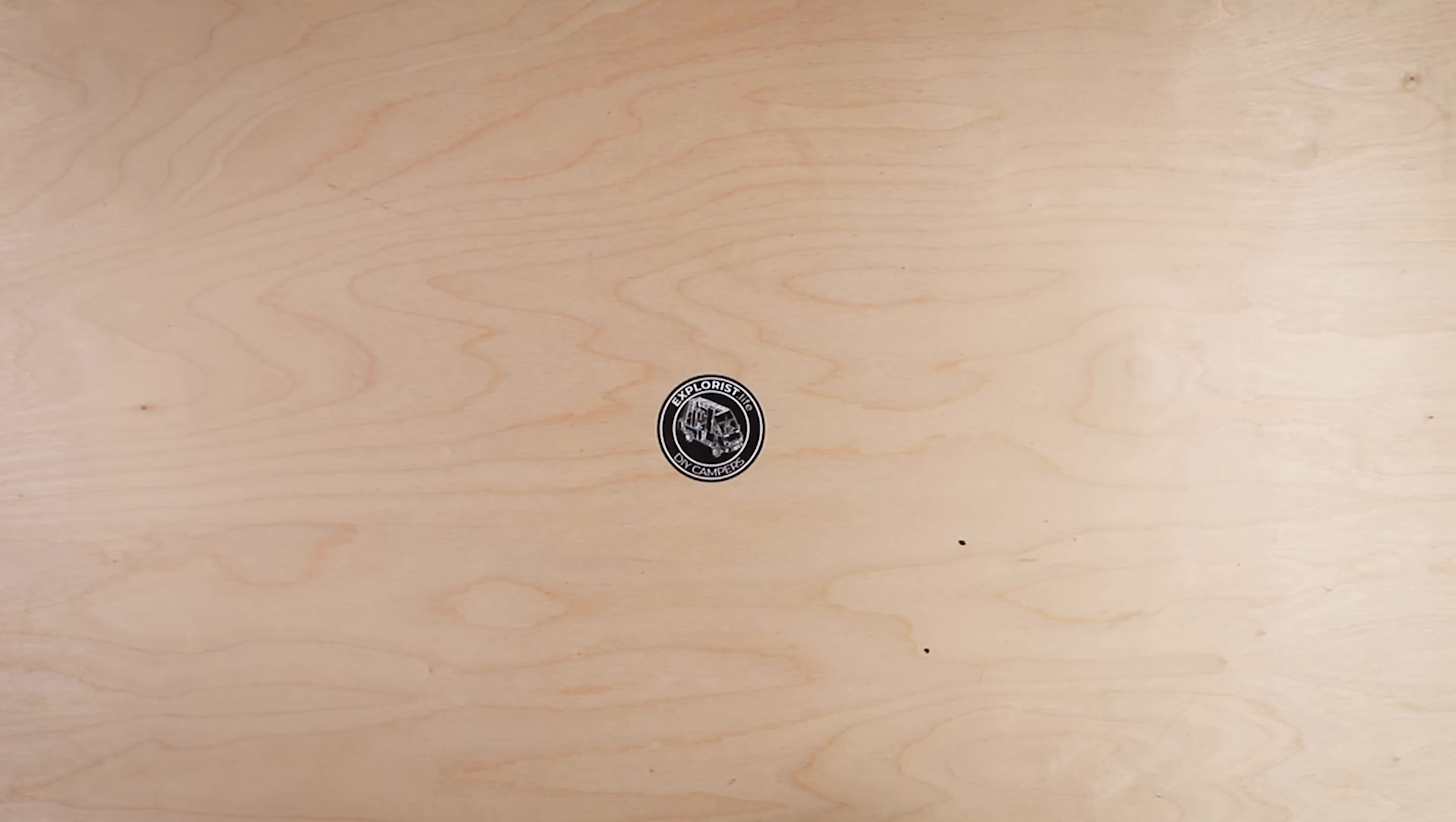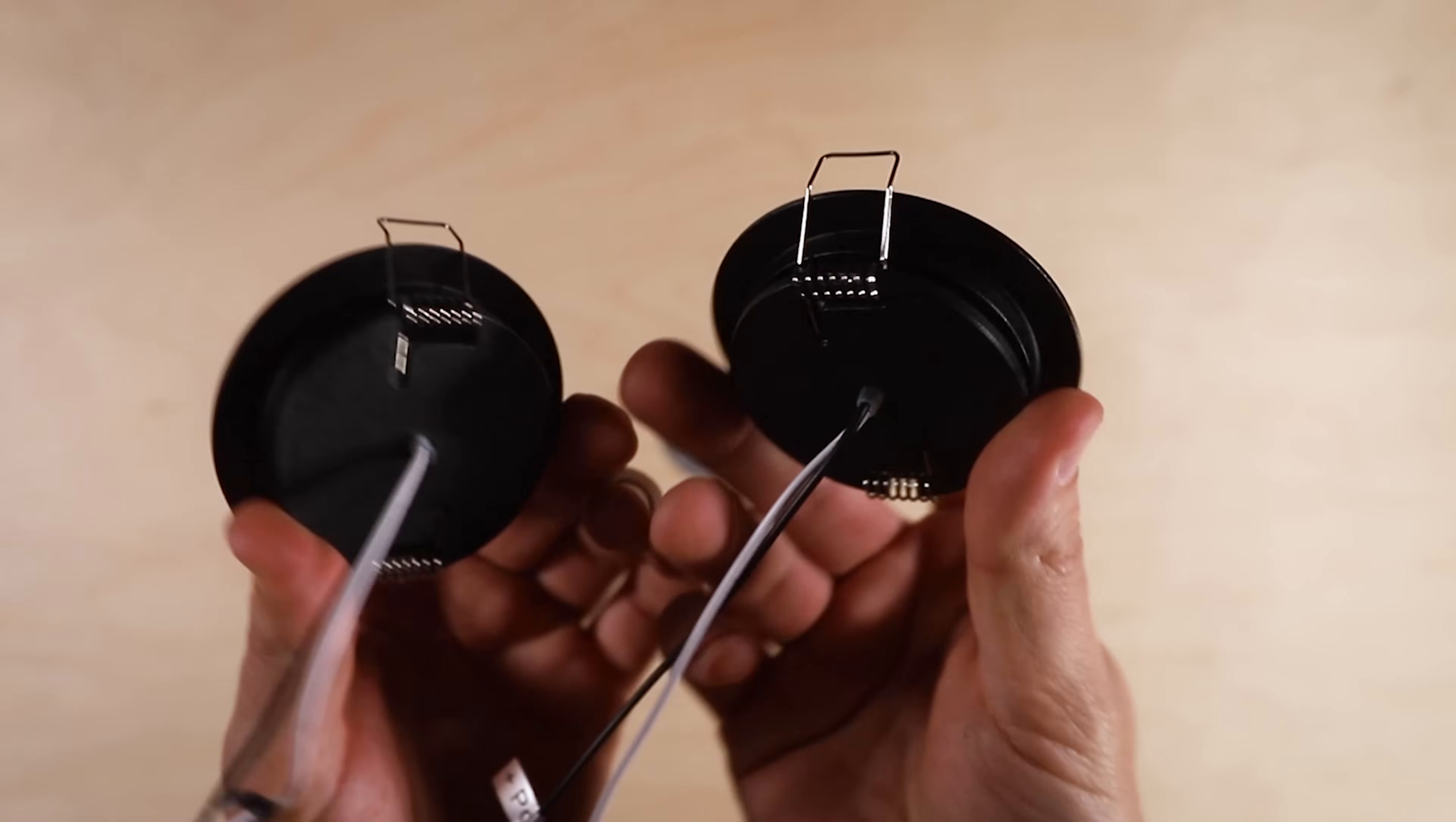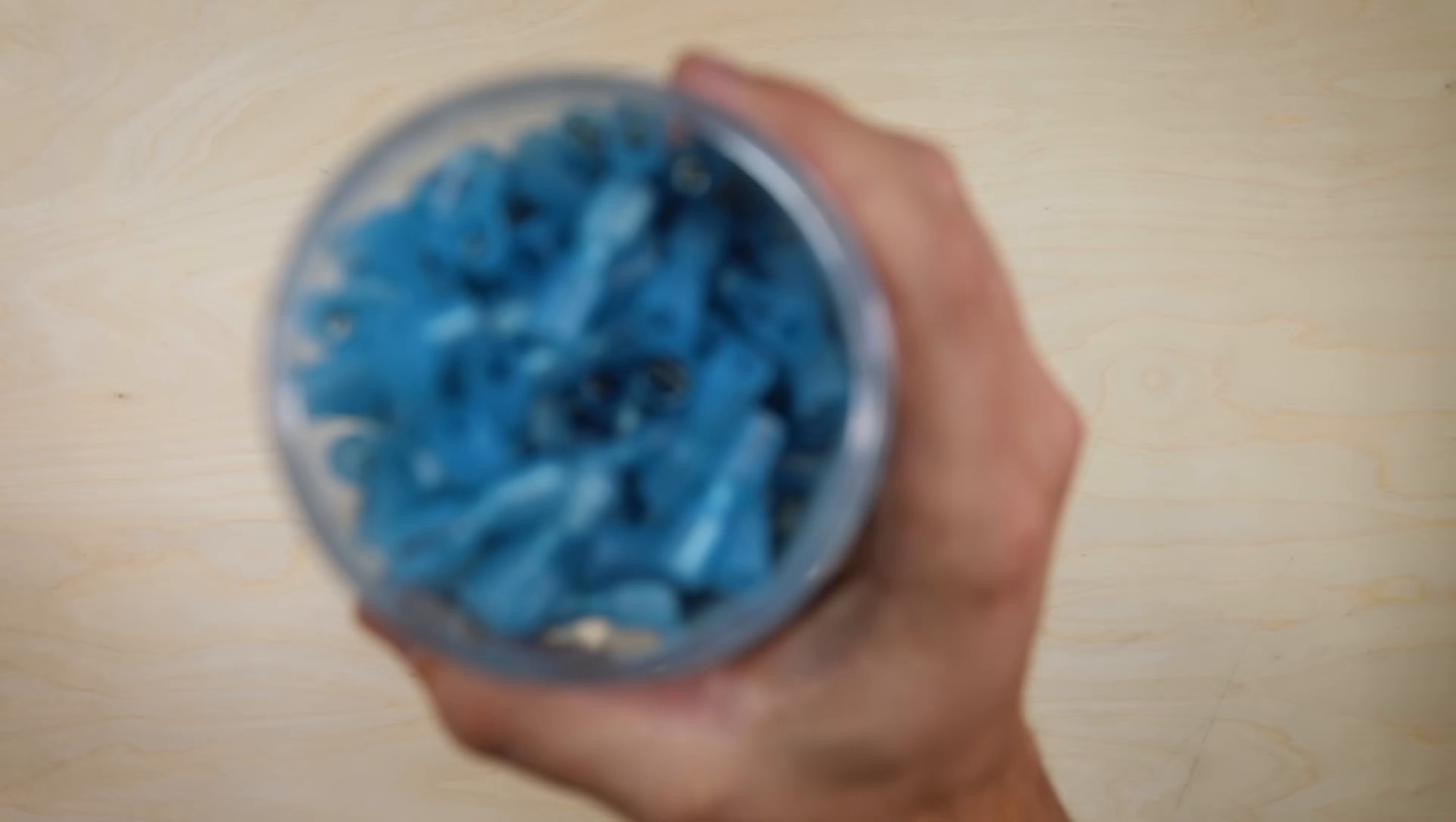Here's a list of parts that you're going to need for this project: puck lights, a single pole single throw switch, and some spade connectors.